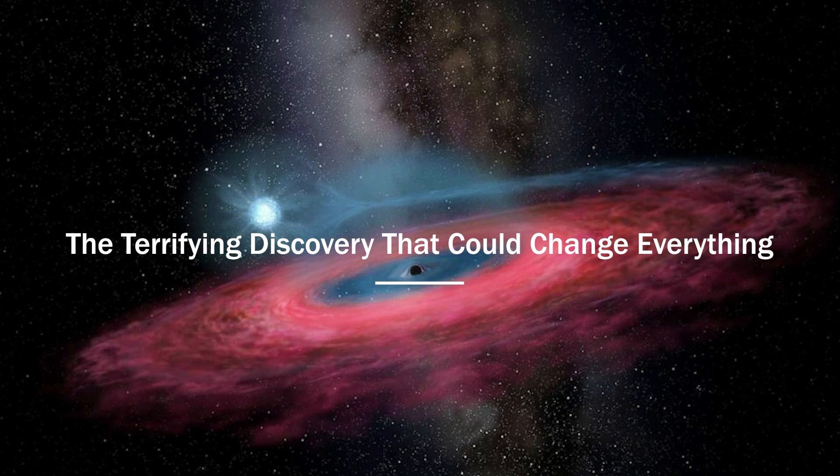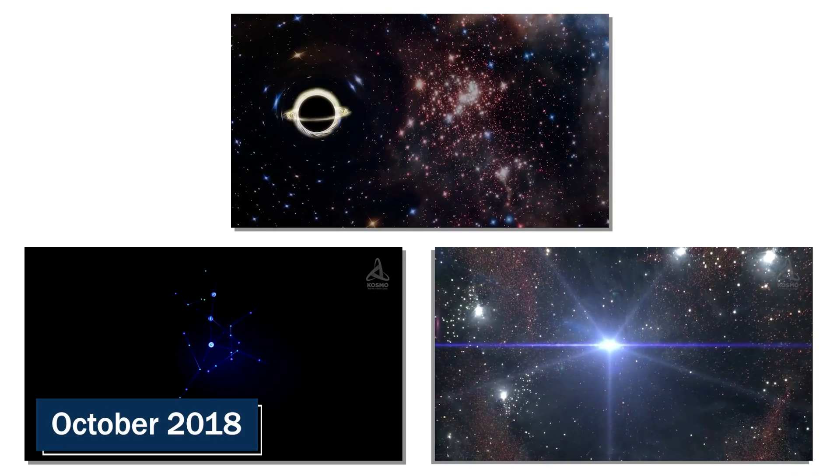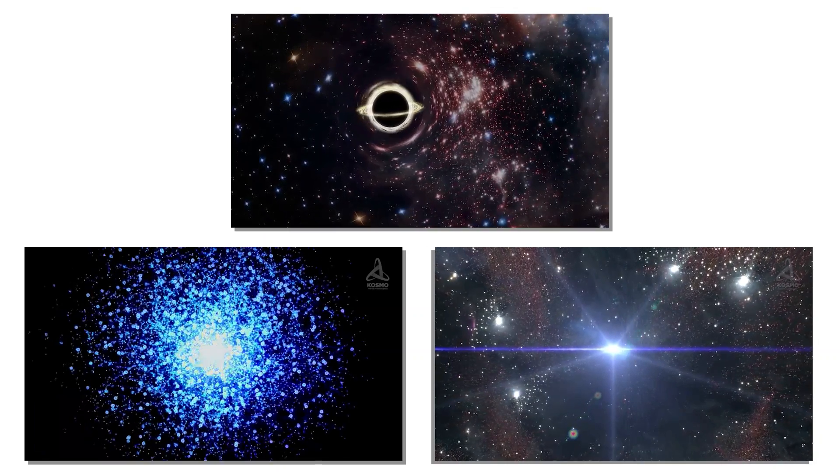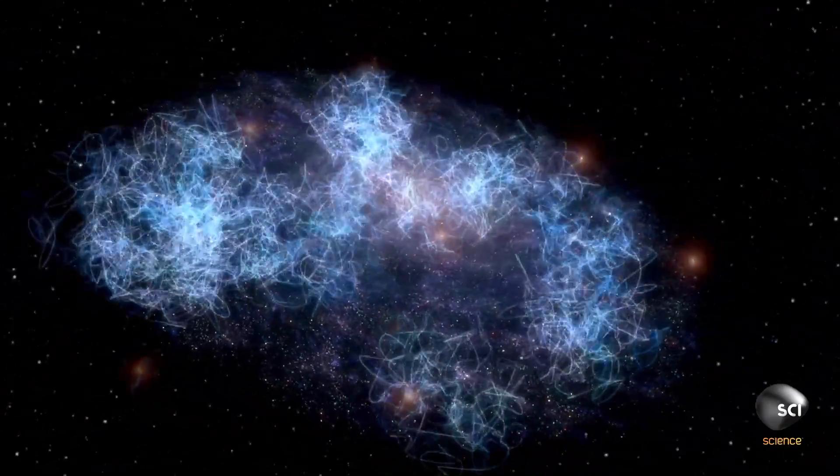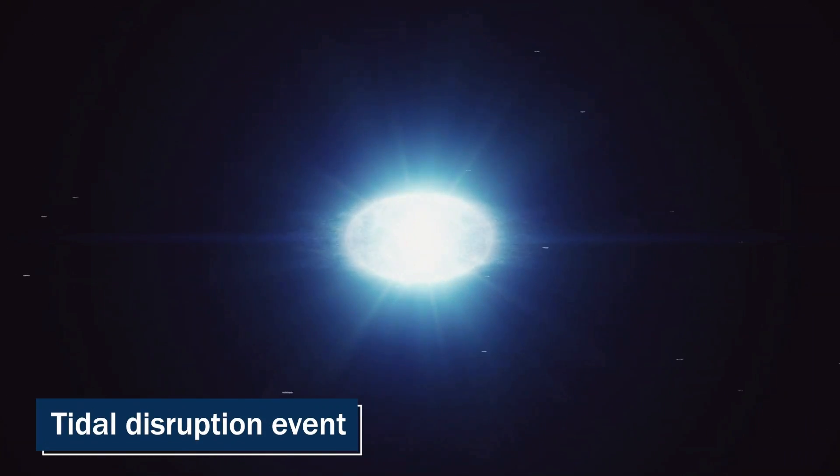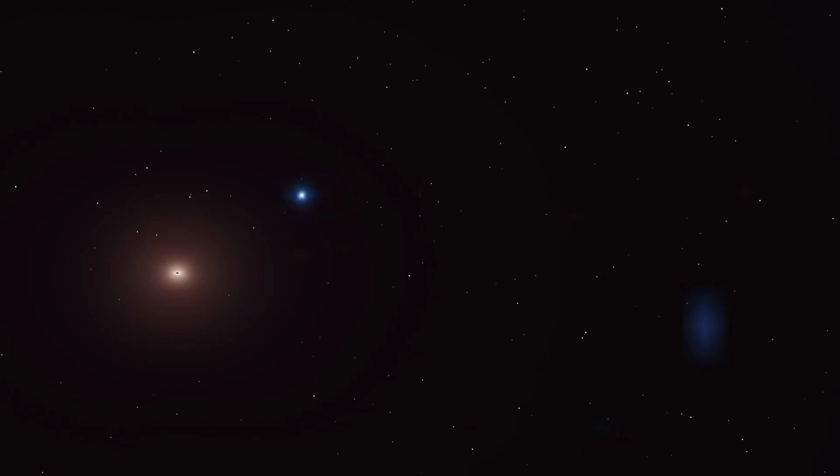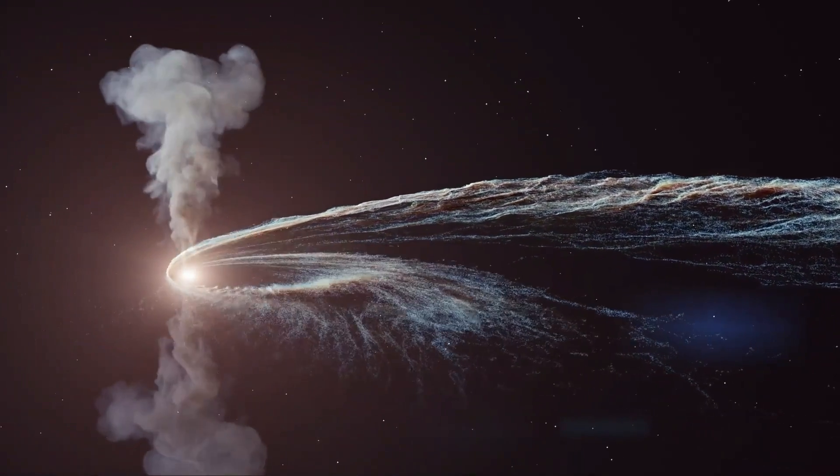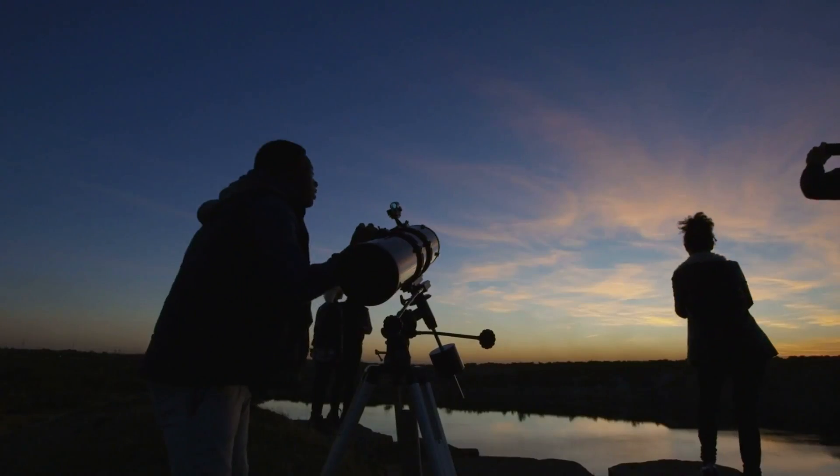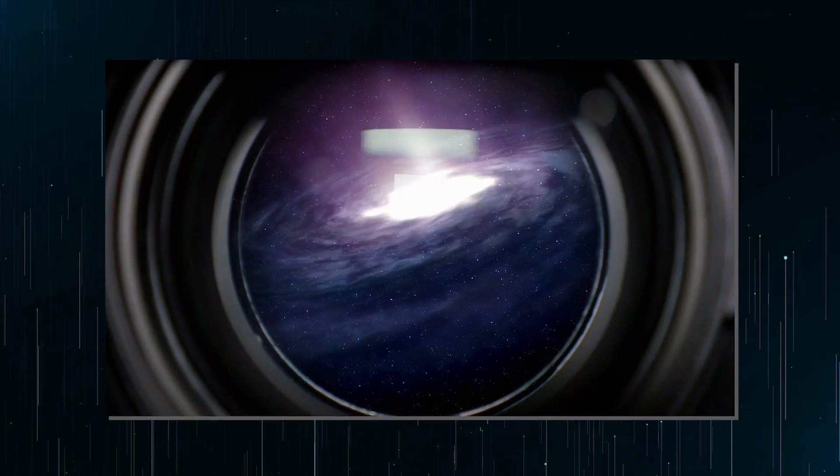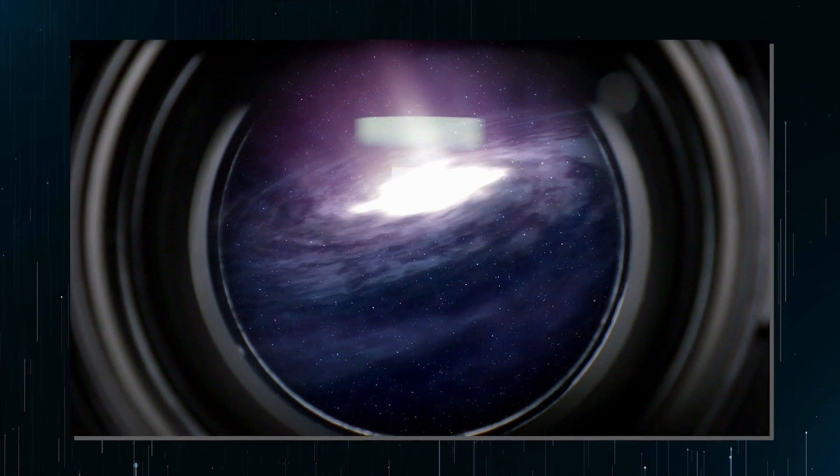The terrifying discovery that could change everything. In October 2018, a small star was violently ripped to shreds when it wandered too close to a black hole in a galaxy 665 million light years away from Earth. This is called a tidal disruption event, or TDE. These are powerful phenomena that occur when a star comes too close to a black hole, causing it to be stretched and spaghettified by the intense gravitational forces of the black hole.